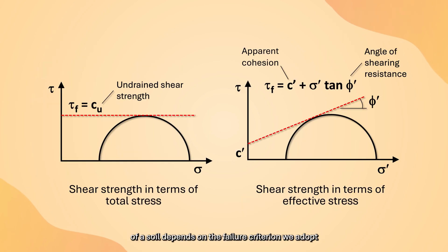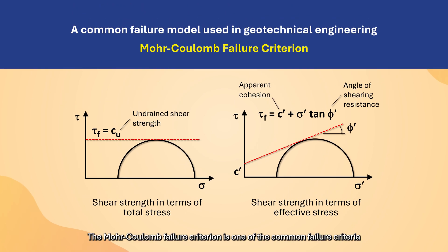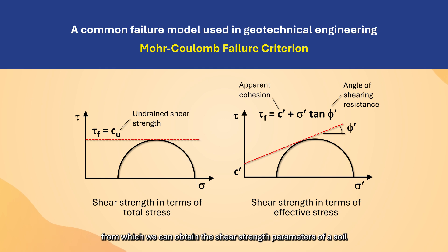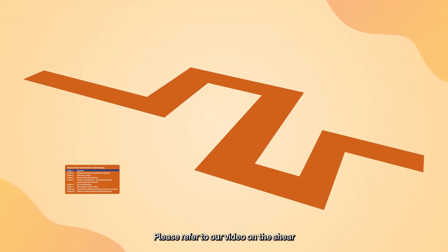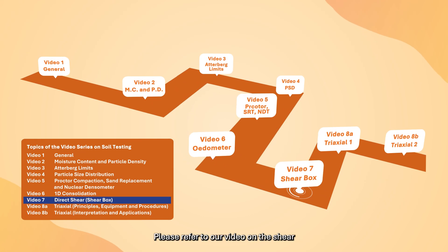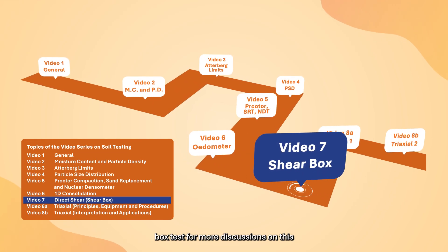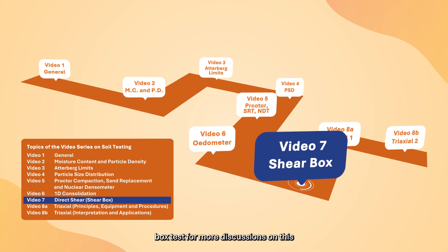The shear strength of a soil depends on the failure criterion we adopt. The Mohr-Coulomb failure criterion is one of the most common failure criteria from which we can obtain the shear strength parameters of a soil. Please refer to our video on the shear box test for more discussions on this.